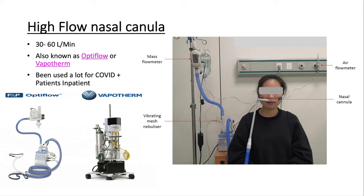High flow nasal cannula can deliver 30 to 60 liters per minute with a combination of heat and humidity to help decrease mucous membrane damage and is overall better tolerated because of the prongs — it's more comfortable for the patient. Key nursing point: the humidifier is a source of infection and can harbor fungus and bacteria — this also includes your nasal cannula or mask. Be sure to change them out as needed and follow your hospital policy guidelines.